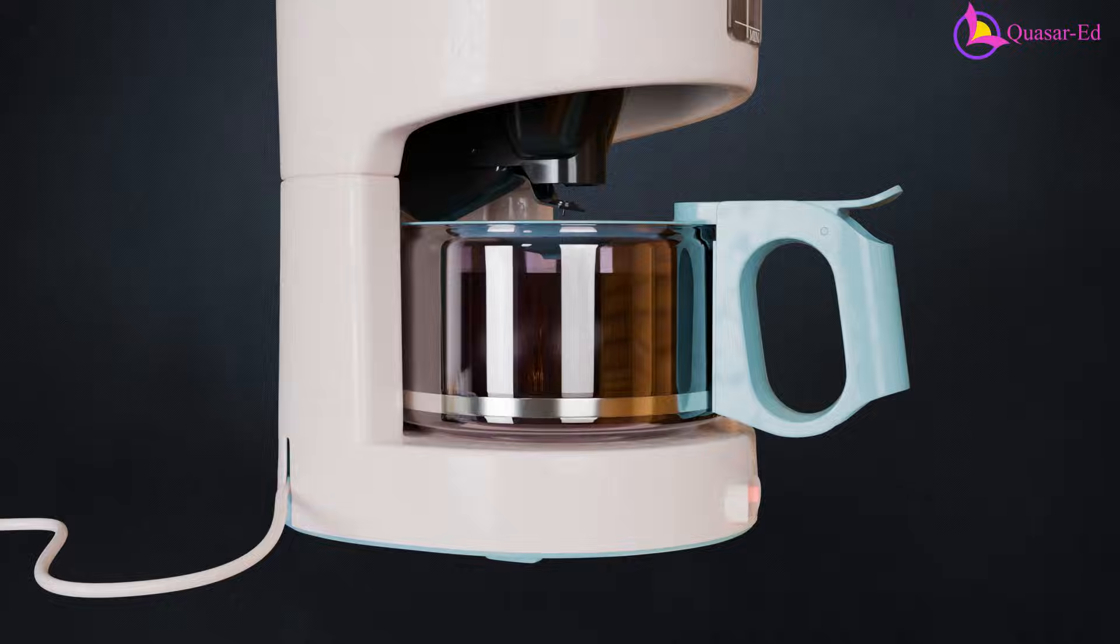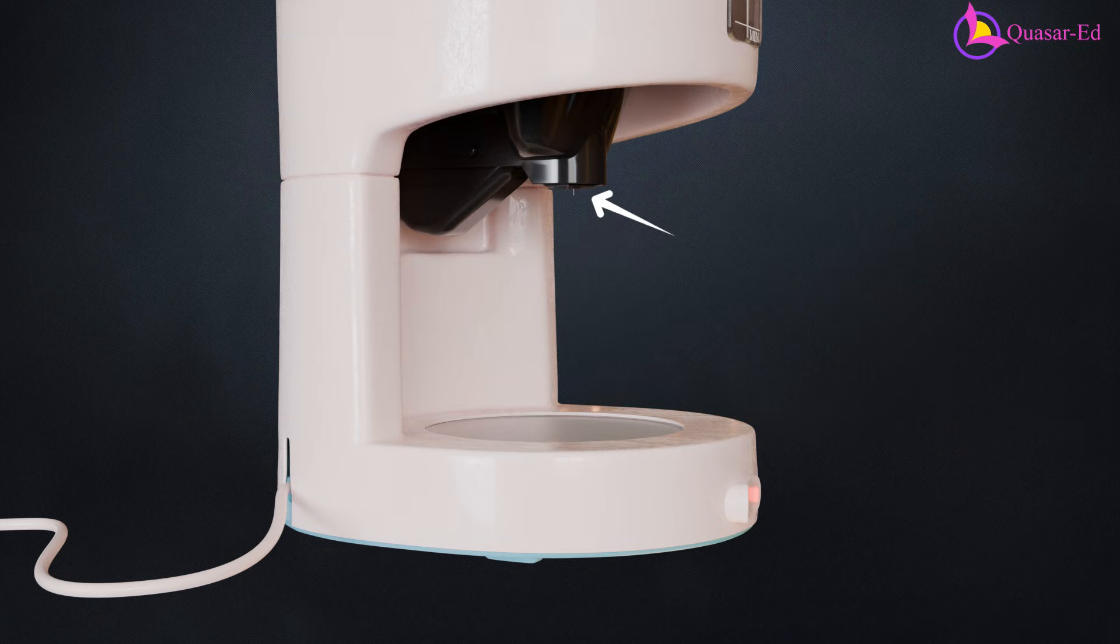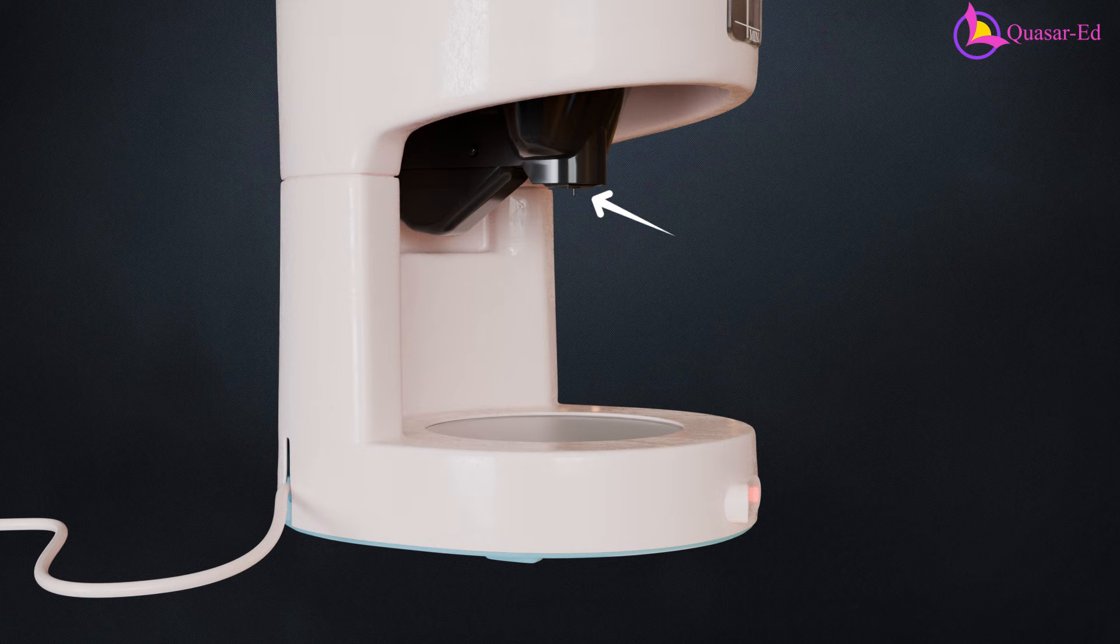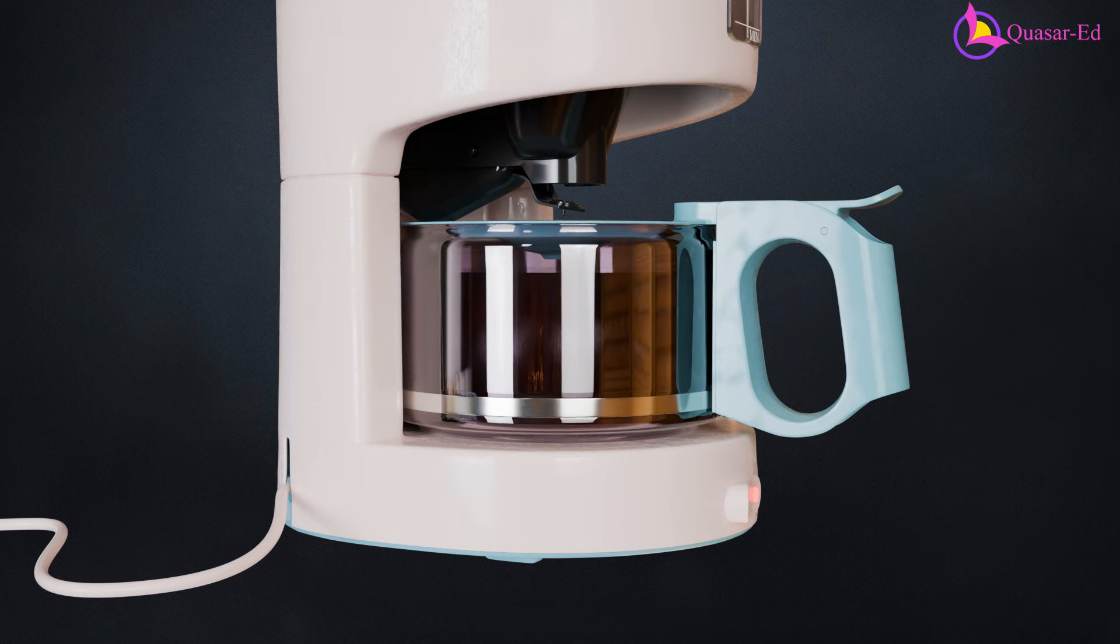And one last detail, when you pull the carafe out mid-brew, a small lever under the basket shuts the drip hole so coffee doesn't spill onto the base. Putting the carafe back pushes the lever up and opens the drip path again.